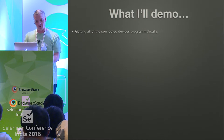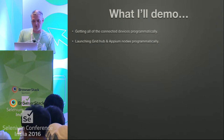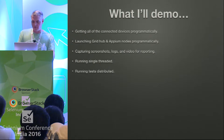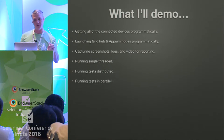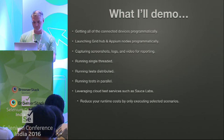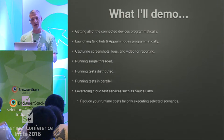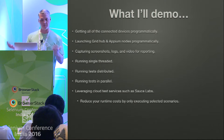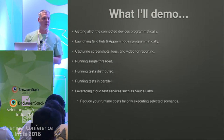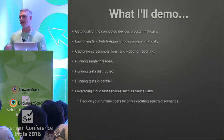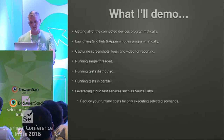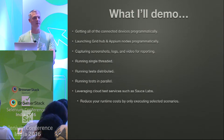In the demo I'll show you how to get all your connected devices programmatically, launch your Grid Hub and Appium nodes programmatically, capture screenshots, logs, and video for reporting. I'll show running single-threaded, running distributed — meaning each device gets its own test so the whole suite completes faster — and running in parallel, where all devices run all the tests. I'll also show how you can leverage cloud services such as Sauce Labs, BrowserStack, or Xamarin for selected tests, rather than sending your whole test suite.